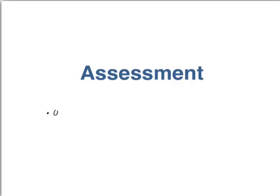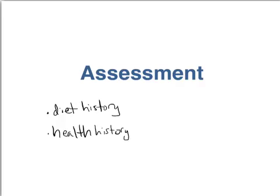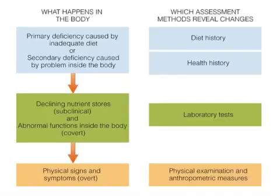There are a number of different factors that must be considered in doing a thorough nutrition assessment. First, you have to assess an individual's diet history — you have to figure out what they have been eating. You also need to consider a patient's health history, not just their own health, but also their family health history. Then you need to do a physical exam, and lastly, it may be necessary to do lab tests to look at a patient's blood or sometimes urine in order to figure out what's going on with them nutritionally. Each of these components has an important role to play.